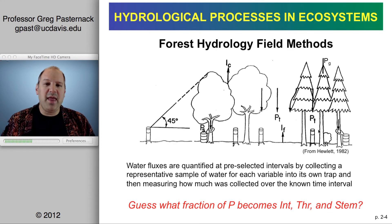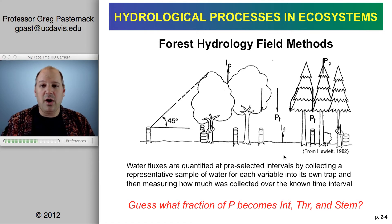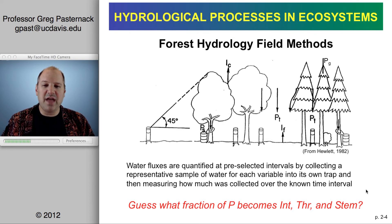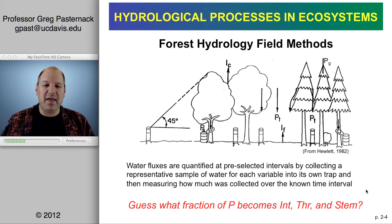The basic question in understanding the hydrology of an individual tree is determining what fraction of gross precipitation goes through the tree as throughfall or stemflow, and how much water gets intercepted. Pause for a minute and think about what percent of water you think gets intercepted by the tree.